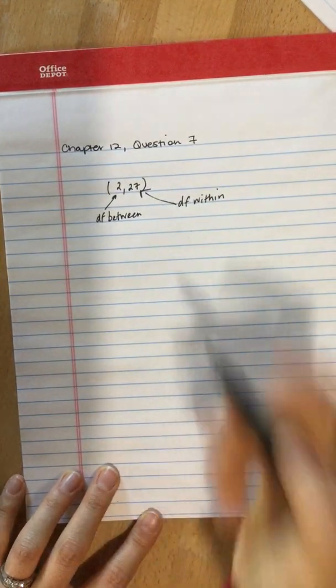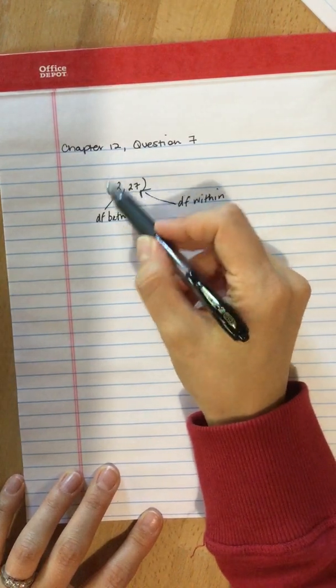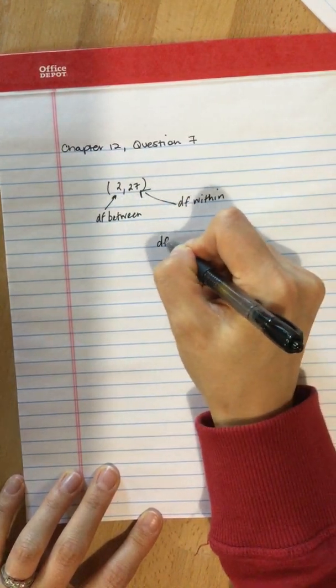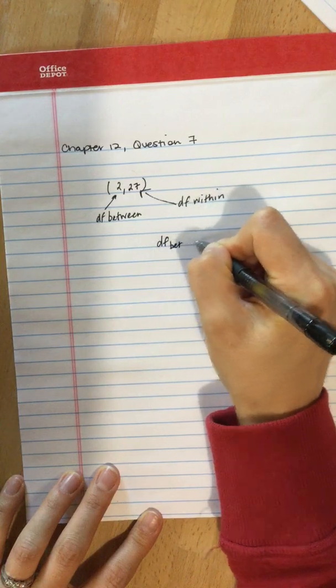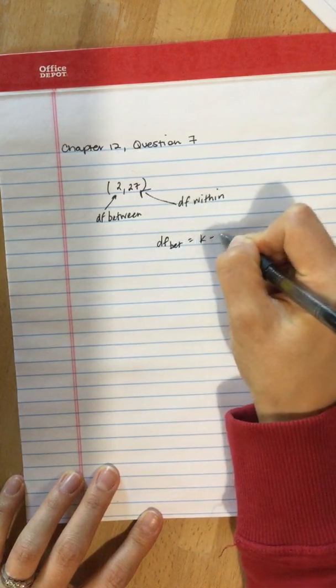This is the degrees of freedom within. To understand or to figure out how many treatment conditions there were, degrees of freedom between equals the number of conditions minus 1.